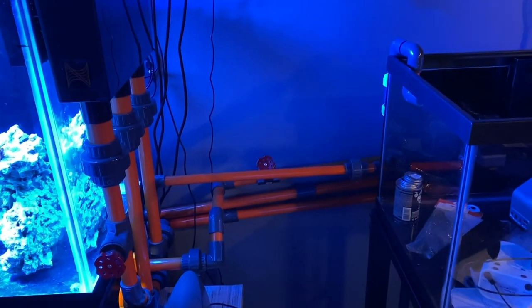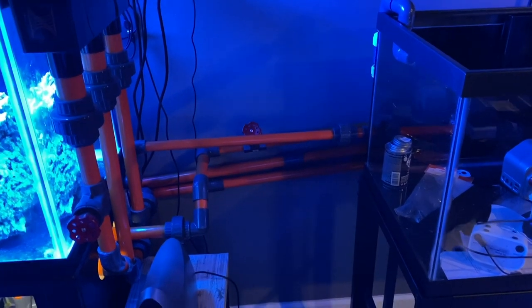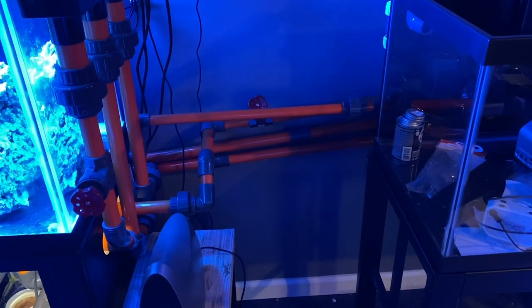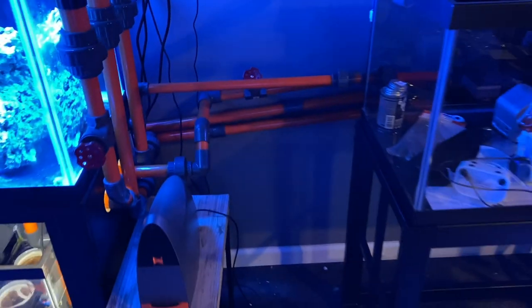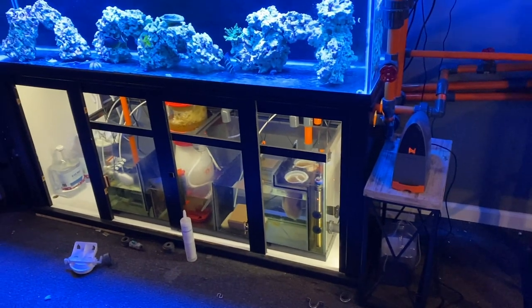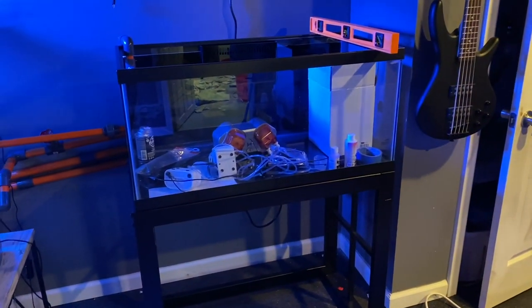So here's the finished product. Looks pretty good. The only thing I would probably do differently is maybe put that return line up against the wall so it's a little more flush with everything else. But I really wanted to avoid putting any more 90s in the return line than I had to. So other than that, it is all hooked up and ready to go, so the next step would be clean out the 40 breeder there and get some water in it.